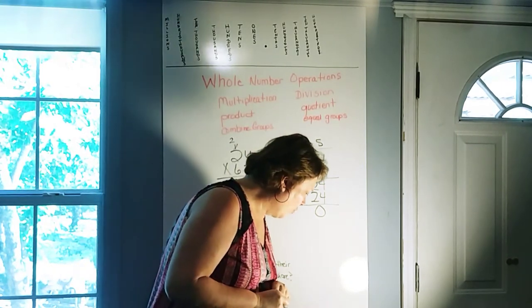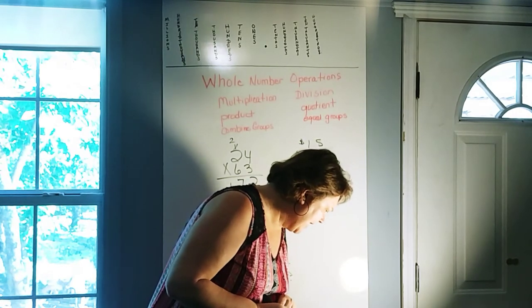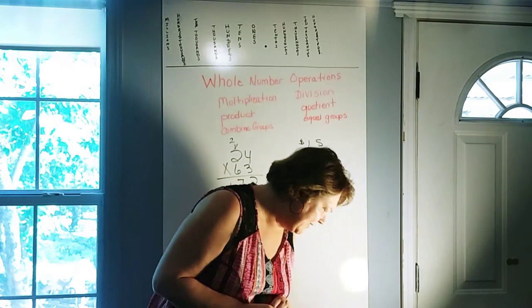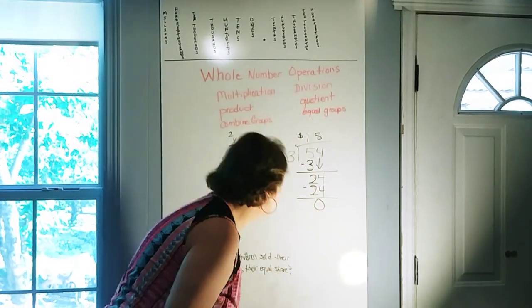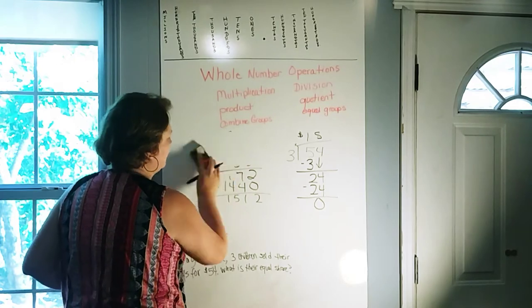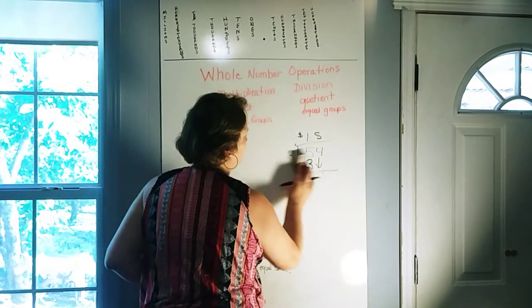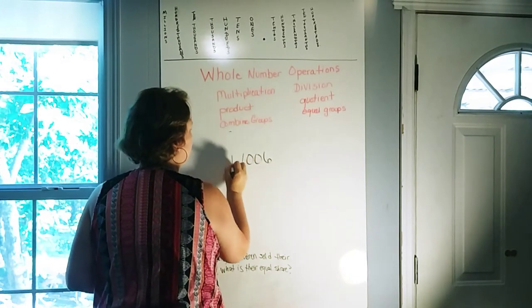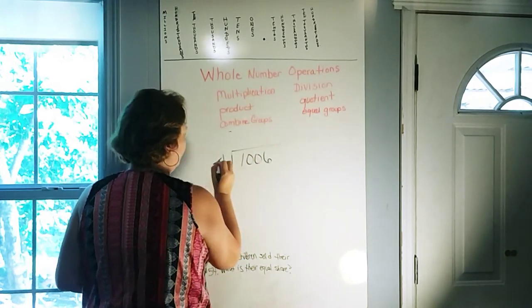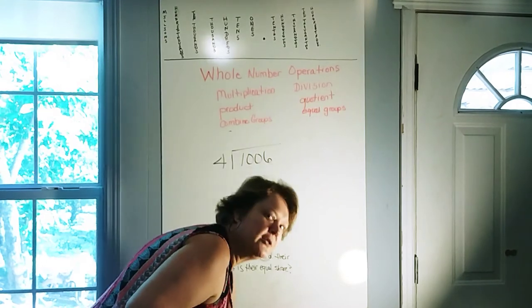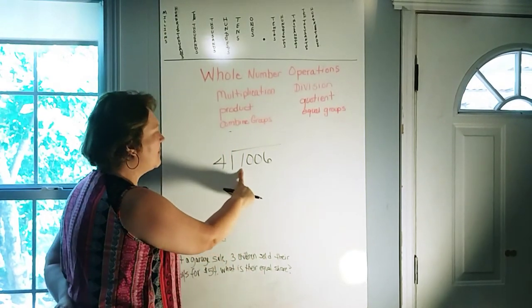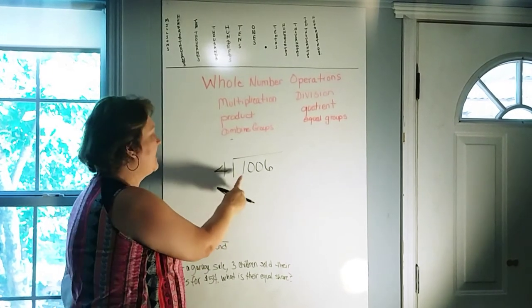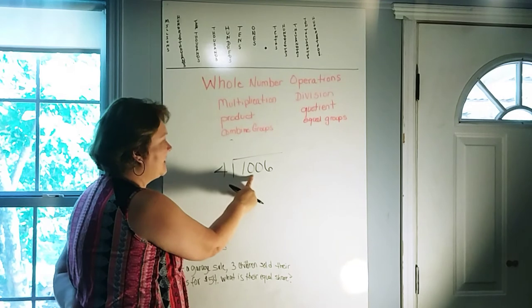And then it gives us one more example, and that is going to be 1,006 divided by 4. So now we have, let's look at our first number. That's a 1. That is less than 4. So we need to go to the next digit. That will give us 10.